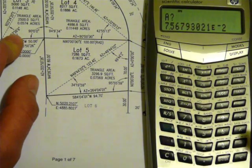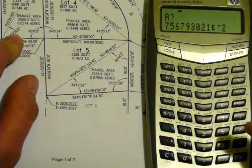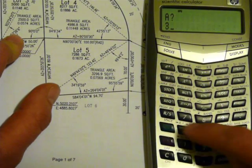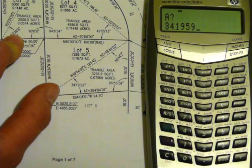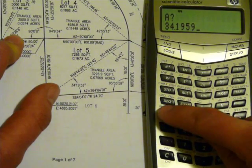The first prompt is for angle, and we can enter that: 34, 19, 59. All the angle values are in degree minute second format, and press RS.